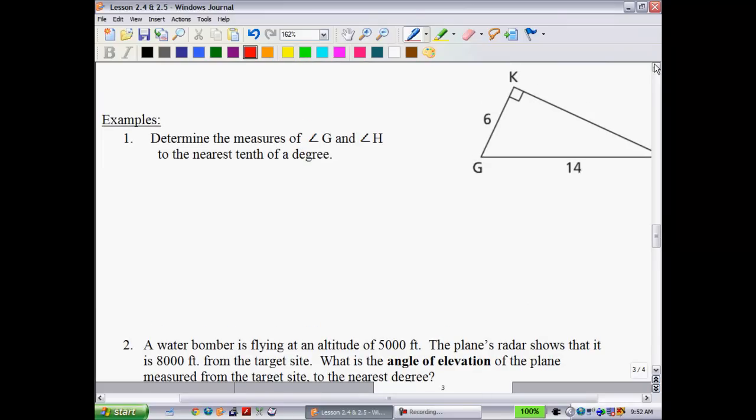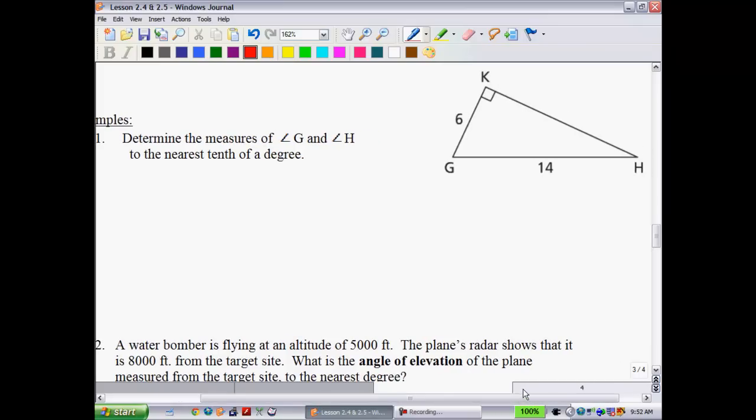Okay. Let's try an example. Determine the measures of angle G and angle H to the nearest tenth of a degree. Well, the interesting thing is, is really you only have to find one angle. Once you find the other angle, you can always subtract it from 90 degrees, and then you're good. So let's look for angle G first. So what we're always going to do is we're going to use the information that we have. In relation to angle G, we have the adjacent side. And we have the hypotenuse. So now you need to think which ratio combines those two. We can go, the cosine, of course.